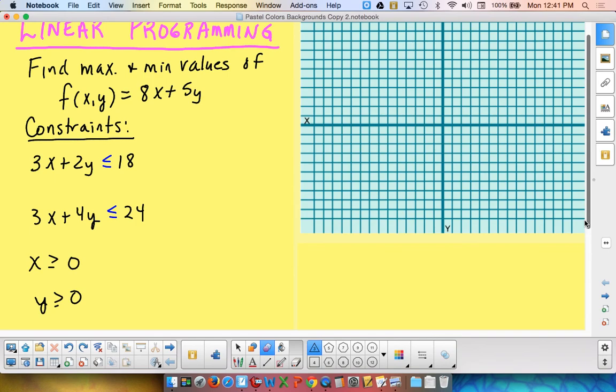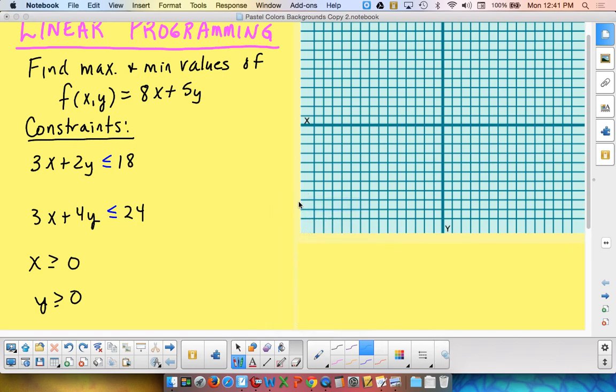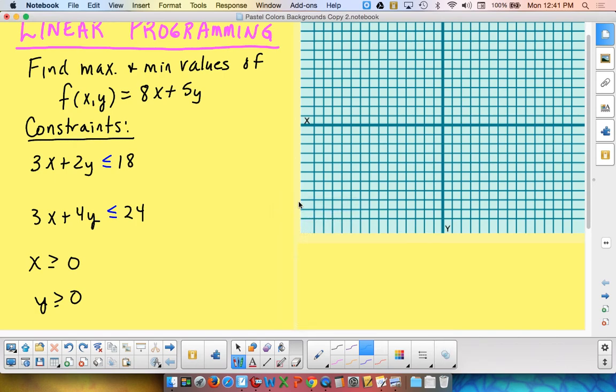The two on the bottom are what I call the common sense constraints. X is greater than zero and y is greater than zero. If we're using this to figure out production levels, you can't produce a negative amount of items. So, x and y will typically always be greater than or equal to zero. It's kind of a common sense thing. Now, the other two inequalities, they are what's really putting limits on how big x and y can be. Because if we have 3x + 2y must be less than or equal to 18, we can't have very large numbers included in that.